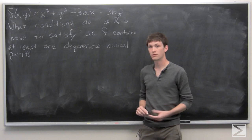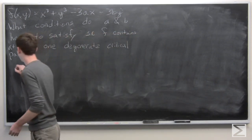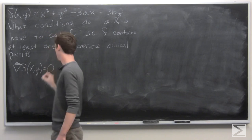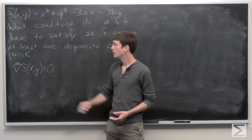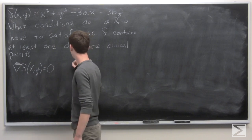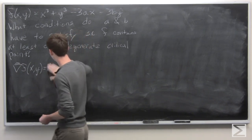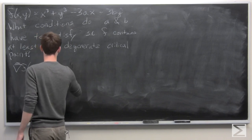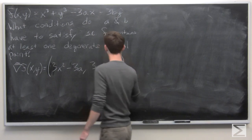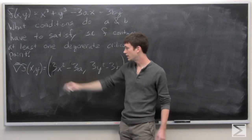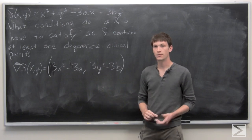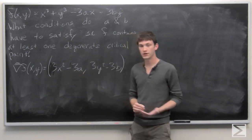First, we want to look at when f has critical points. We know that f has critical points when the gradient vector is equal to 0 or undefined. So let's look at the gradient vector of f with respect to x and y. The partial derivative of f with respect to x is 3x squared minus 3a, and the partial derivative of f with respect to y is 3y squared minus 3b. We want both of these components to be equal to 0.